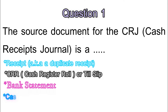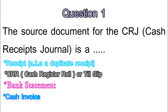The fourth source document is a cash invoice. This is the same as the cash register roll but has more detail. It is issued when a business sells a few more items a day or provides a service for cash. The fifth is a bank deposit slip, which is completed whenever money is deposited into the business's bank account. The bank keeps the original; the business keeps the duplicate as confirmation that the money was deposited.